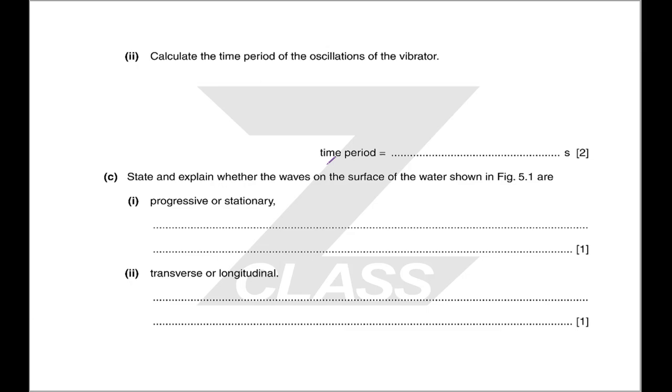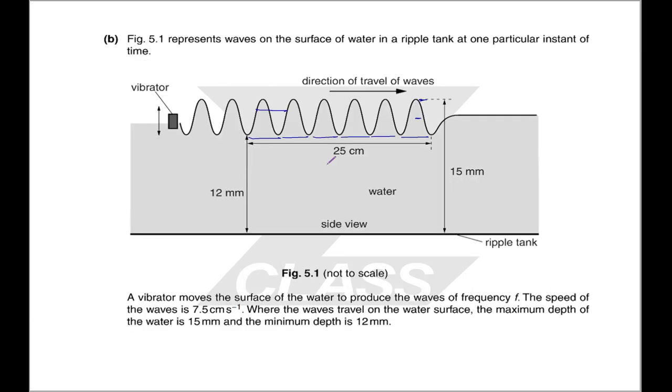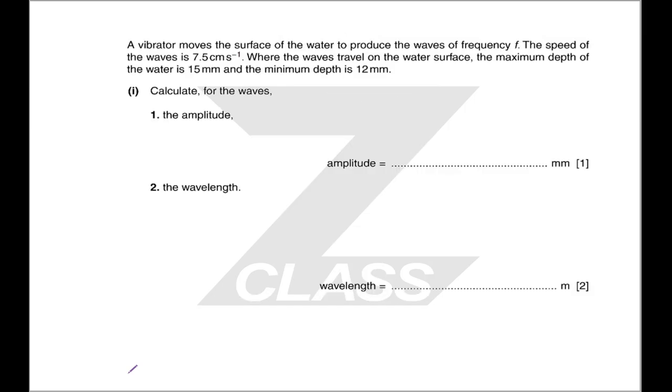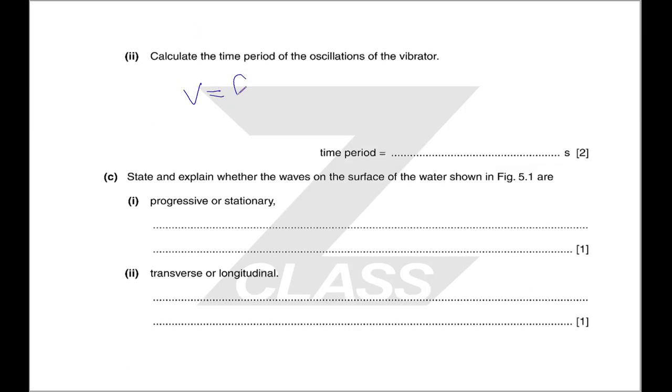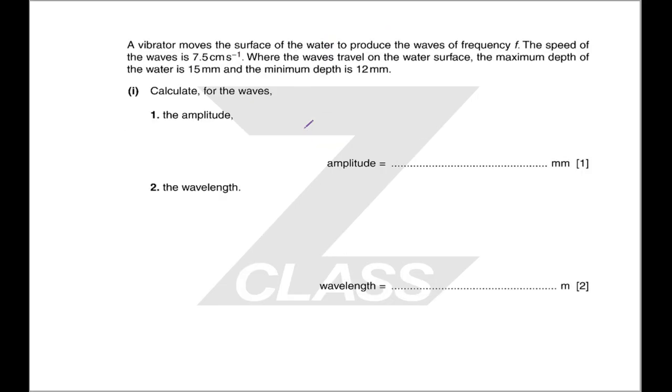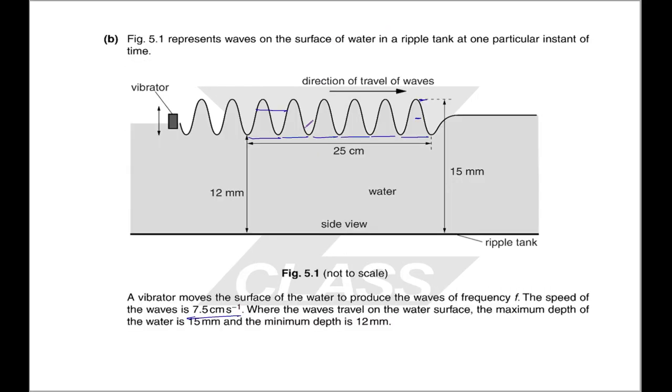Calculate the time period of the oscillations of the vibrator. So this one is a little more interesting. We have been given a wave speed. Since we are given a wave speed, we can find the frequency. We have V equals F lambda. We've found the wavelength, we've been given the speed, so we can find the frequency. And then T equals 1 over F. And this just requires you to recognise that the time period of the vibrator is going to be the same as the time period of our waves.